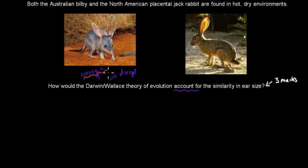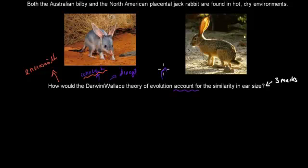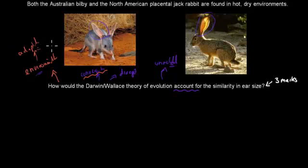Convergent evolution is where you have two different unrelated species which have similar characteristics because they live in similar environments. You should have written about the environments they live in and how their characteristics help them survive in those dry environments. You should also mention that the species are quite unrelated — one is a marsupial mammal and the other is a placental mammal — so even though they have similar ear sizes, they wouldn't actually be closely related. Talk about convergent evolution and the fact that these are unrelated species.